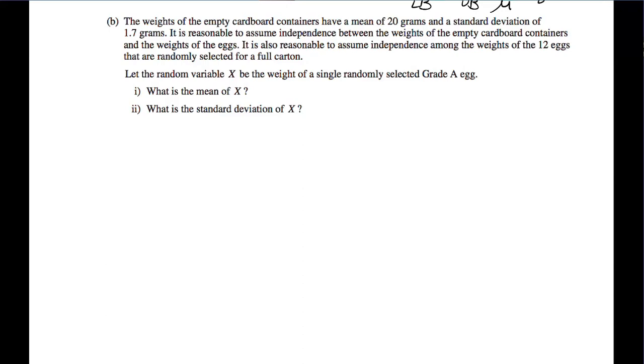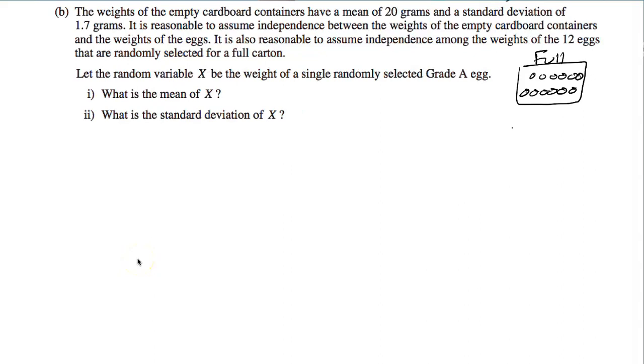The weights of the empty cardboard containers have a mean of 20 grams and a standard deviation of 1.7 grams. It is reasonable to assume independence between the weights of the empty cardboard containers and the weights of the eggs. It is also reasonable to assume independence among the weights of the 12 eggs that are randomly selected for each carton. Let the random variable X be the weight of a single randomly selected egg. So what we have here is that in part A, we were told the mean of a full carton, 12 eggs plus the carton, is 840 grams. Here, you're told an empty carton, its mean is 20 grams. We'd like to know the weight of a single egg.